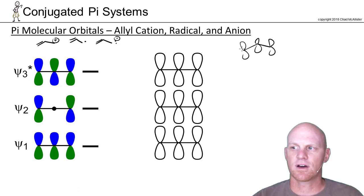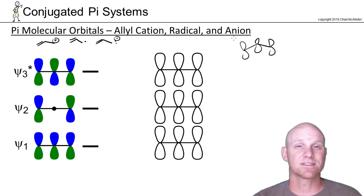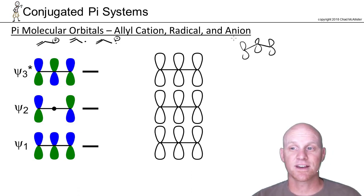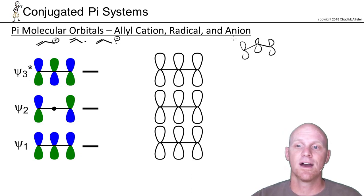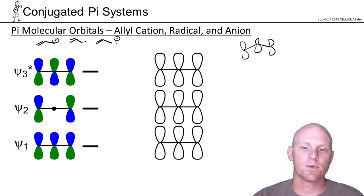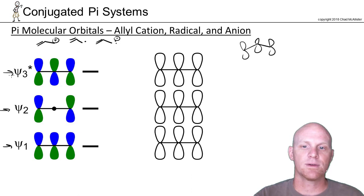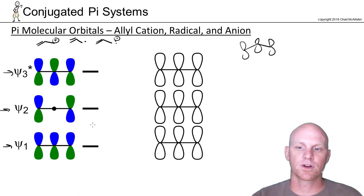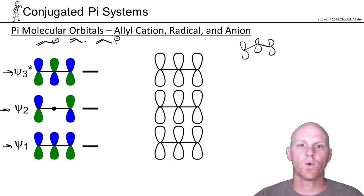You'll get delocalization across the entire system. We can see this in the context of drawing resonance structures for each of these. But with three p-orbitals involved, that's why we've got one, two, three molecular orbitals, and we'll comprise them all of three orbitals, as we'll see here in a minute.